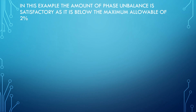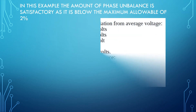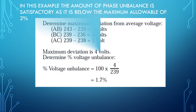In this example, the amount of phase unbalance is satisfactory, as it is below the maximum allowable of 2%. We determined the maximum deviation from average voltage was 4 volts.